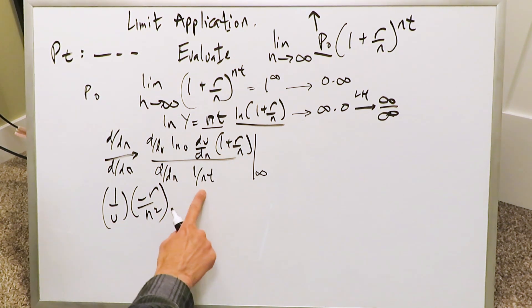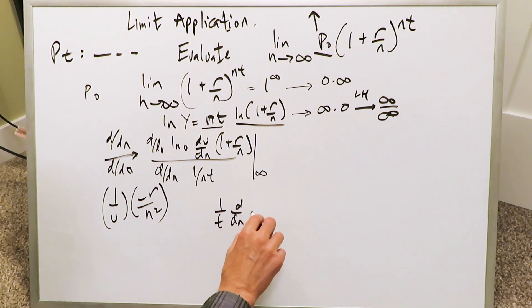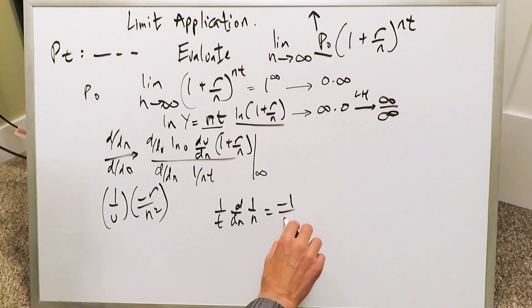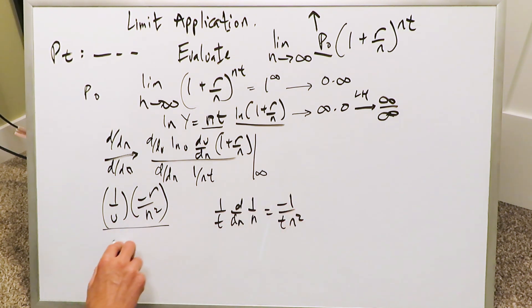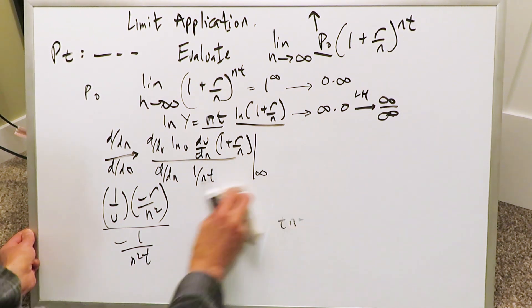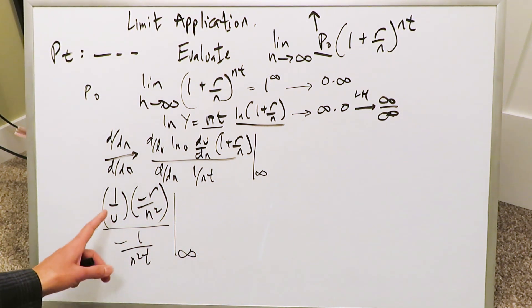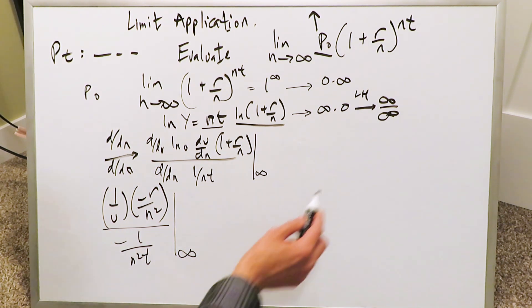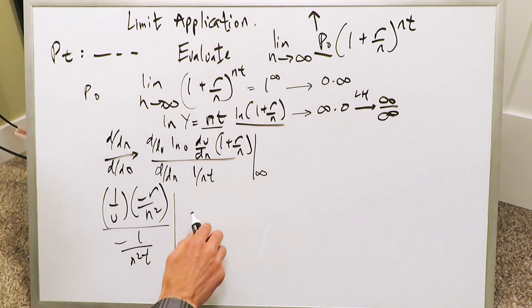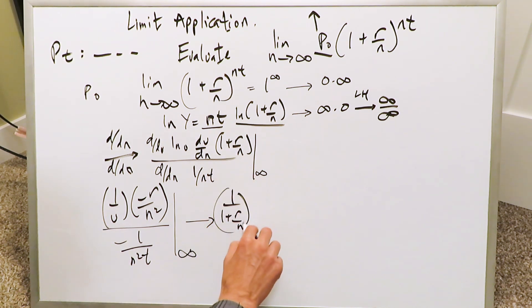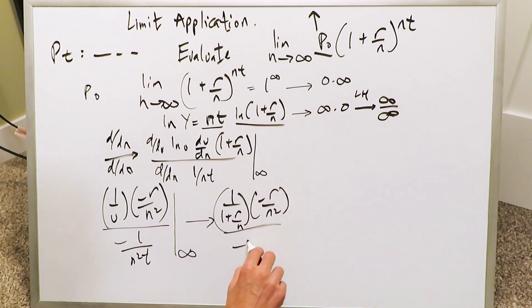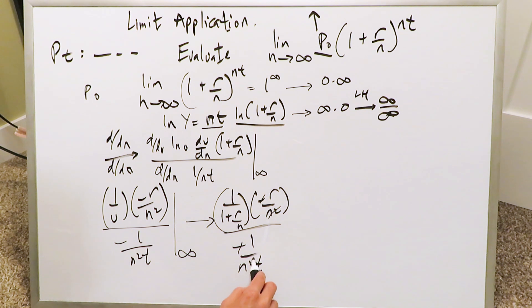For the derivative of 1/(nt) with respect to n, you treat 1/t as a constant times the derivative of 1/n, giving −1/(tn²). Now substituting u back as 1 + r/n, you have −r/n² in the numerator and −1/(tn²) in the denominator. The minus signs cancel, and the n² terms cancel, which puts us on a good path.